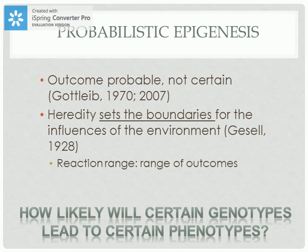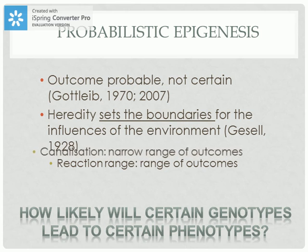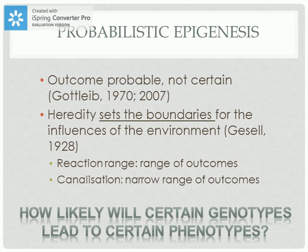There are some traits that have a greater range of outcomes based on genes, and others where the environment has less influence. For example, physical outcomes like height can be influenced to a degree by the environment, but not as much as other traits like IQ. This is termed canalization.